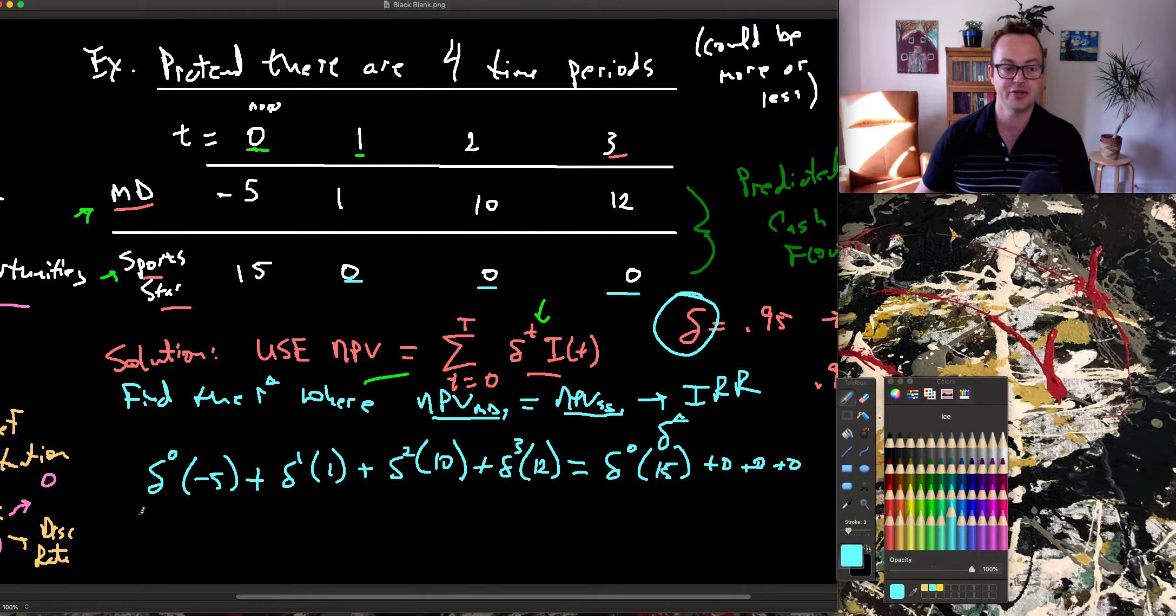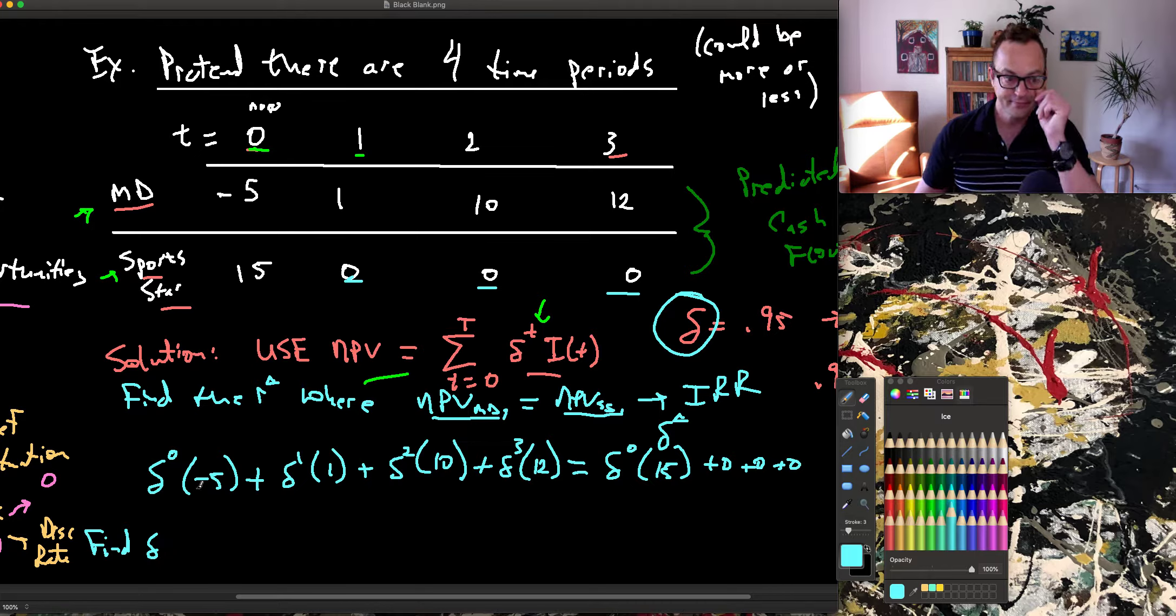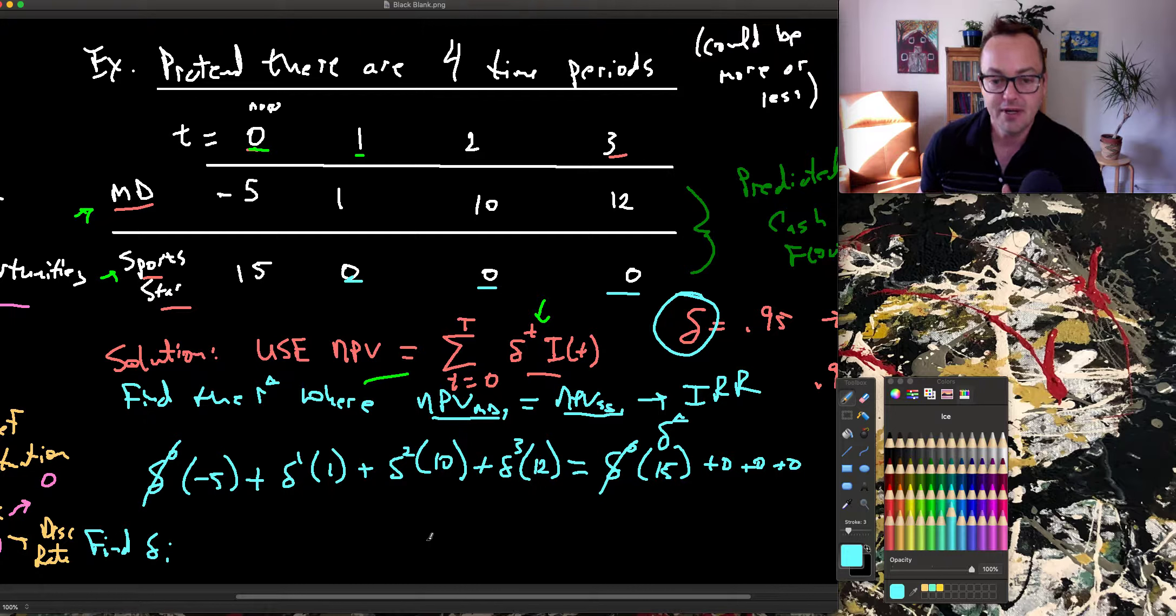Now what I have to do is I have to find delta. So I can simplify these a bit. These cancel out because they're just 1s. Let's see, what do I do here?